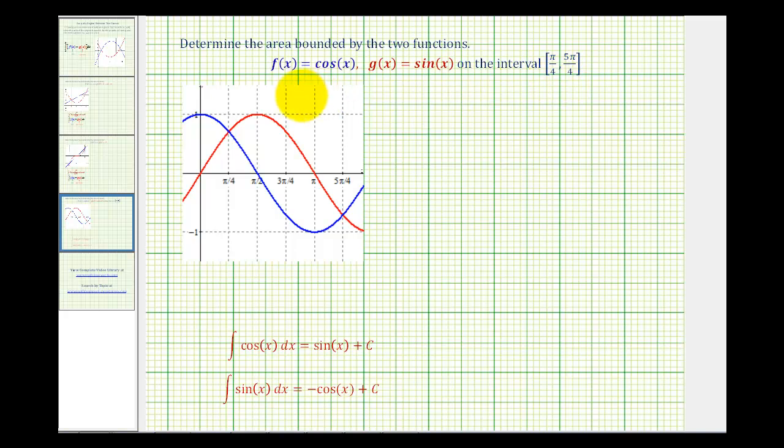Now the reason they give us a specific interval for these two functions is, notice by the graph, they have an infinite number of intersection points and therefore the bounded area would be infinite unless we considered it on a specific interval.